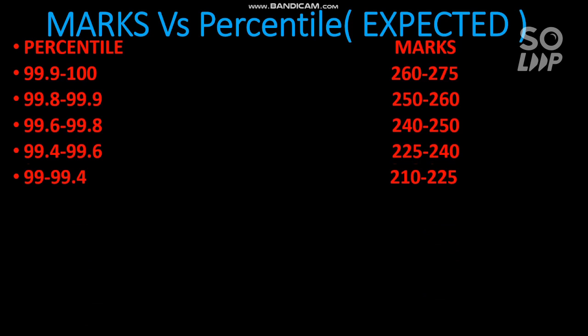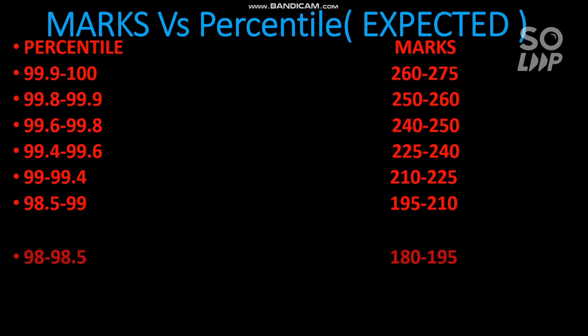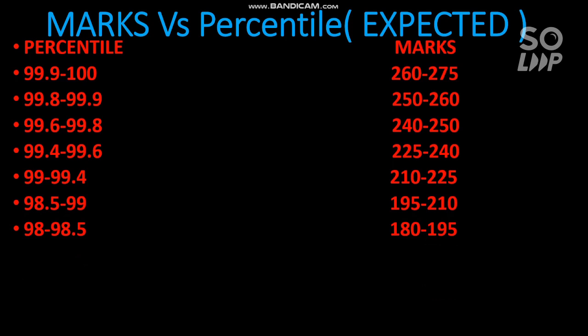For 99 to 99.4 percentile, your marks would be 210 to 225. I will make the next video on percentile versus category rank updated for the increment in unique students this year, covering OBC rank, SC rank, and ST rank. For 98.5 to 99 percentile, you need to score 195 to 210 marks. For 98 to 98.5, you need 185 to 195 marks.